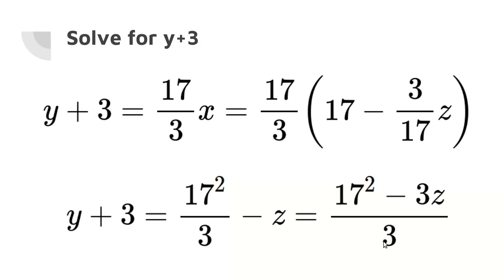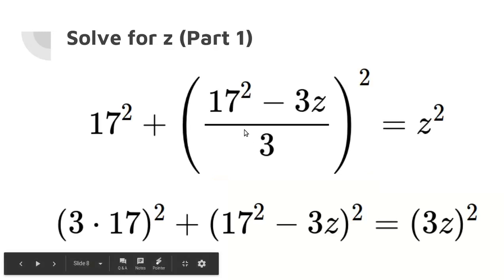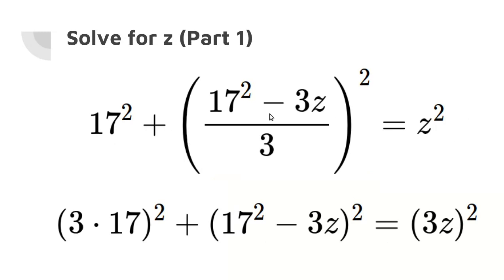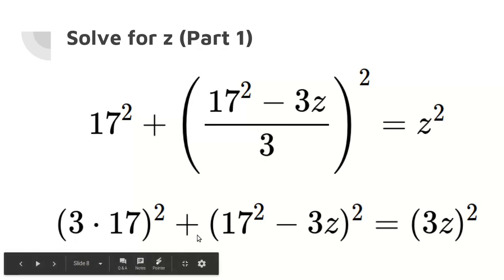With that, we can go back to the Pythagorean theorem and substitute this value in for Y + 3. So now we have 17 squared plus, in parentheses, (17 squared minus 3Z) all over 3 squared equals Z squared. This is very complicated, especially because there's a fraction, but it turns out we can multiply both sides by 3 squared in order to get rid of that fraction. So we're left with 3 times 17 squared plus (17 squared minus 3Z), in parentheses, squared equals (3Z), in parentheses, squared.